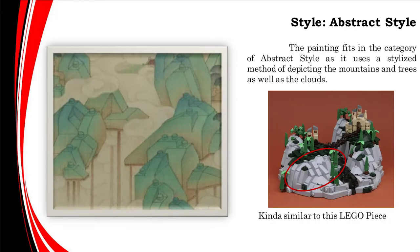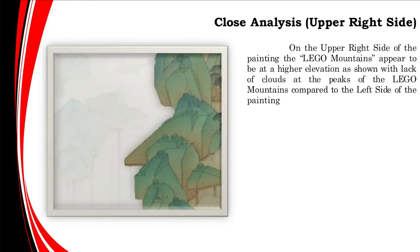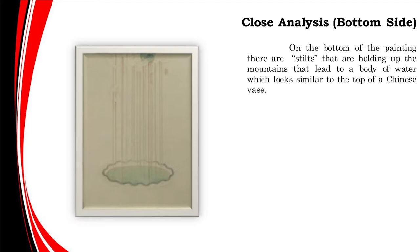The painting fits in the category of abstract style as it uses a stylized method of depicting mountains, trees, and clouds. On the upper left side, the Lego mountains appear to be at a lower elevation, as shown with the clouds covering the top peaks. On the upper right side, the Lego mountains appear to be at a higher elevation, with a lack of clouds at the peaks. On the bottom of the painting, there are stilts holding up the mountains that lead to a body of water which looks similar to a Chinese vase.